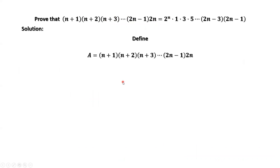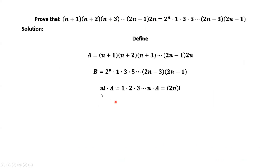Let's define the left-hand side as a and the right-hand side as b. n factorial times the left-hand side equals 1 times 2 times 3 ··· times n, then times a, where a equals (n+1)(n+2)(n+3)···(2n). Therefore, n factorial times a equals the product of 2n consecutive numbers from 1 to 2n, which is (2n) factorial.